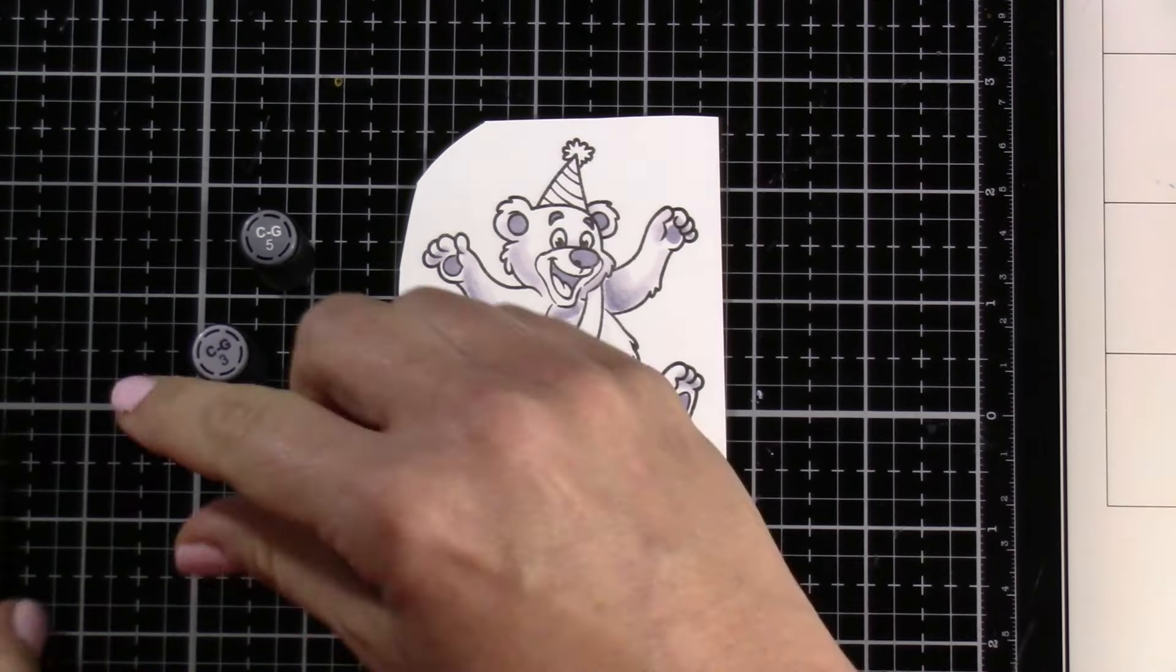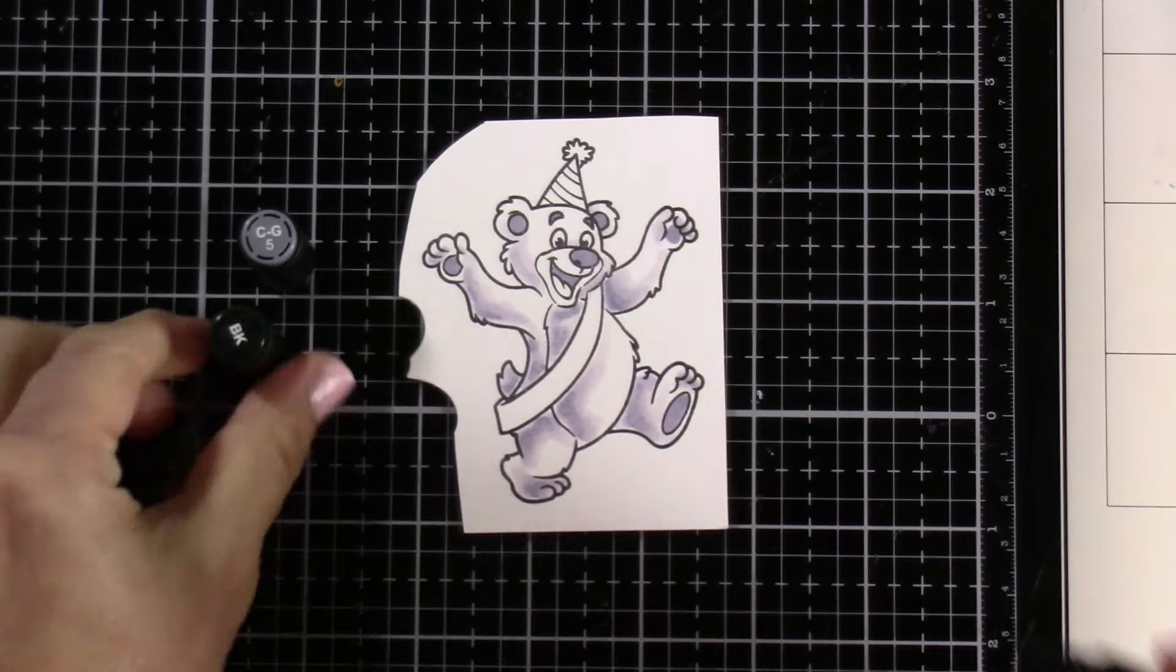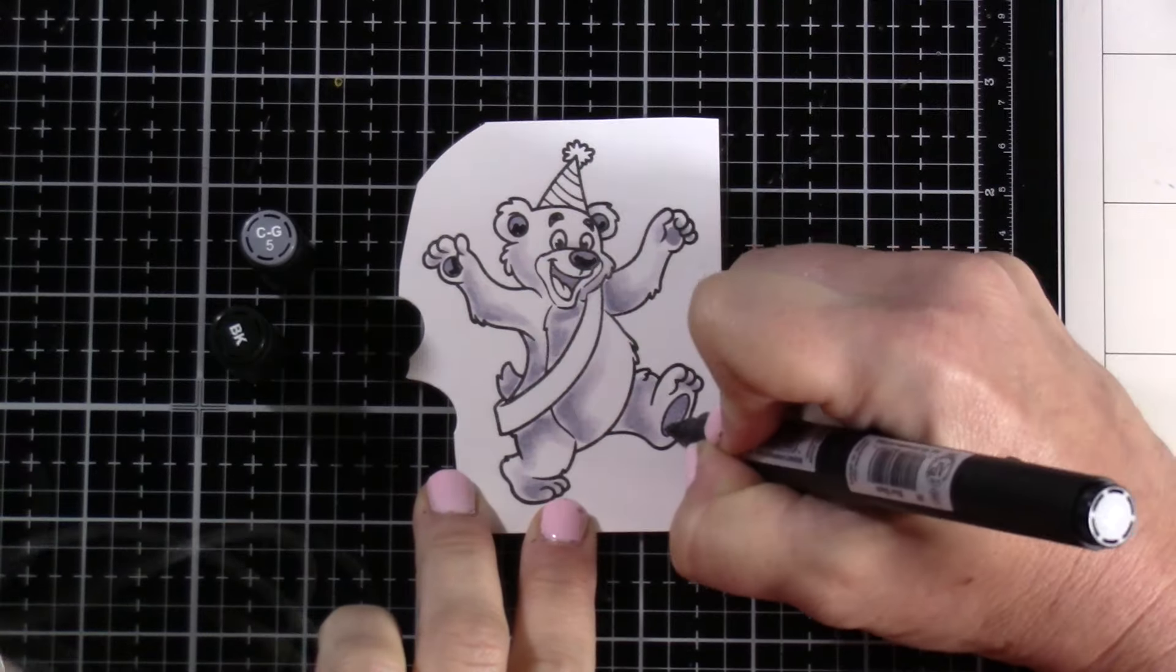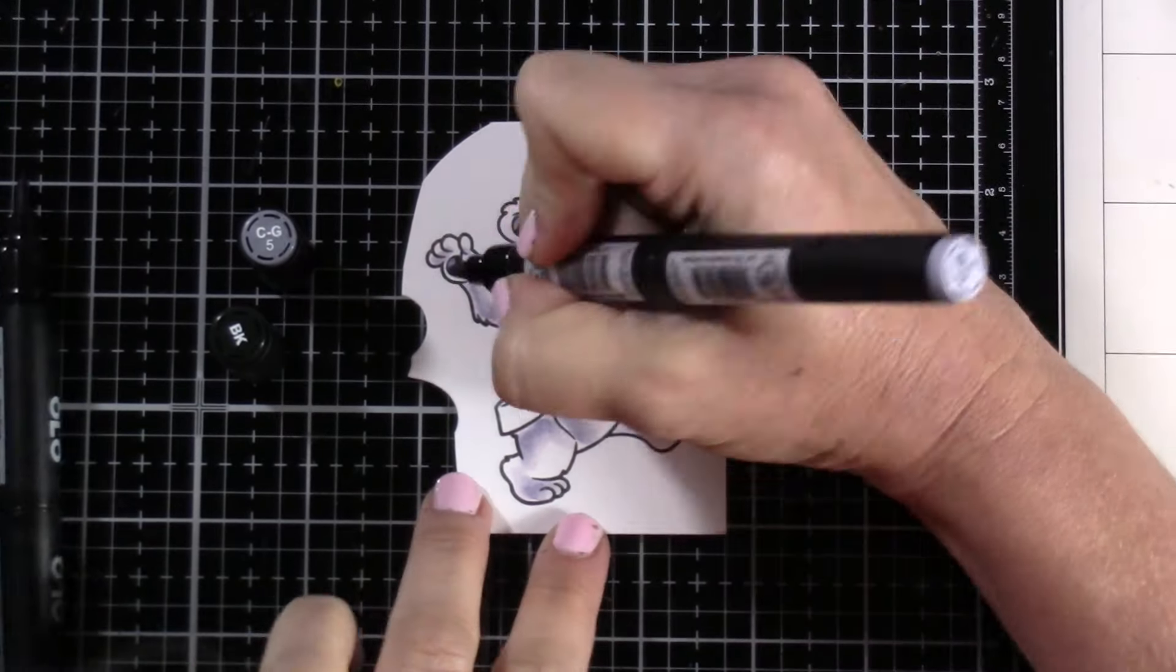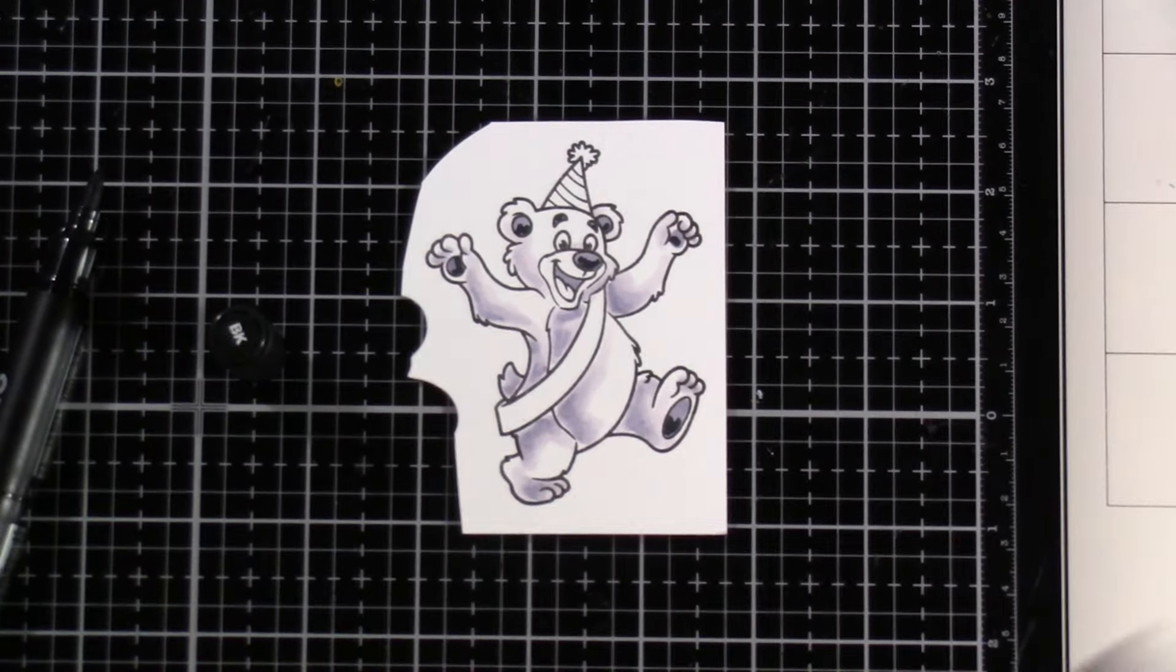And I did stamp this image out using some Blackout ink and I stamped it onto some Express It cardstock, so all are alcohol marker friendly products.